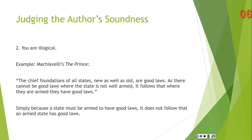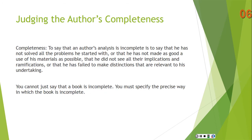Now, this doesn't undermine the entire book, just anything relevant to that statement. We've dealt with soundness — now let's deal with completeness. To say that an author's analysis is incomplete is to say that he has not solved all the problems he started with, hence he didn't achieve the purpose of the book; or that he has not made as good a use of his materials as possible; or that he did not see all their implications and ramifications; or that he has failed to make distinctions relevant to his undertaking. Note: you must specify the precise way in which the book is incomplete.